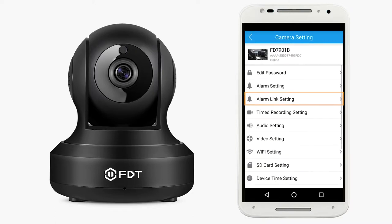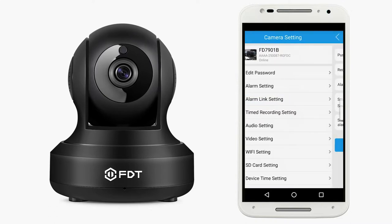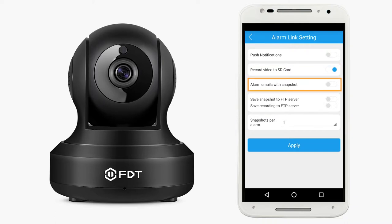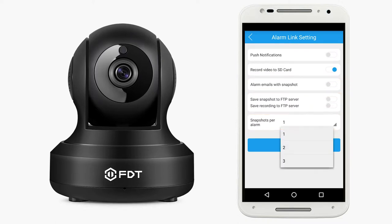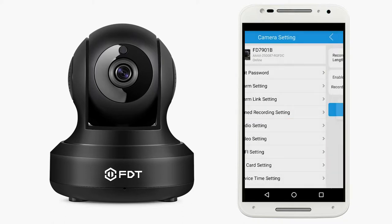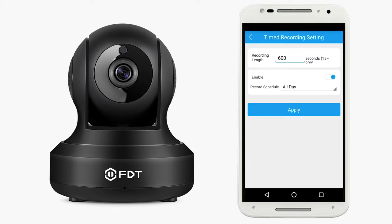Alarm Link Settings: here you can enable or disable push notifications to your smartphone, record video to the SD card, alarm emails with snapshots, save snapshots or recordings to the FTP server, and select the number of snapshots per alarm. Time Recording Setting: here you can set the recording length and enable or disable a record schedule.